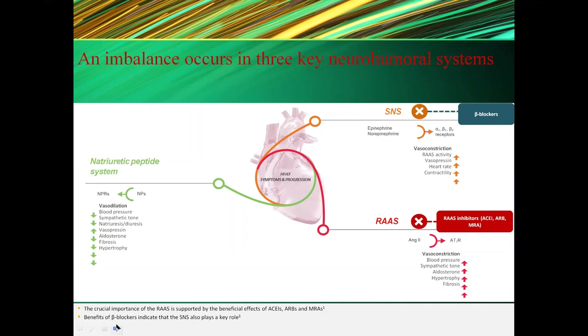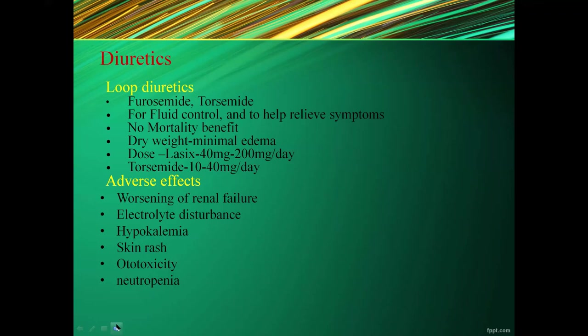The three key neurohumoral systems are targeted by drugs: beta blockers act on the sympathetic nervous system, and RAS inhibitors including ACE inhibitors, ARBs, or ARNIs act on the renin-angiotensin system. Loop diuretics such as furosemide and torsemide are commonly used for fluid control and symptom relief, with no mortality benefit. Dosing: furosemide 40–200 mg per day; torsemide maximum 40 mg per day. Adverse effects include worsening renal failure, electrolyte disturbances, hypokalemia, skin rash, and neutropenia.